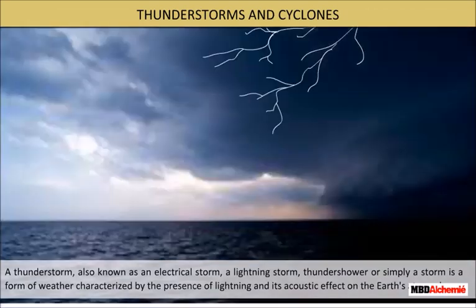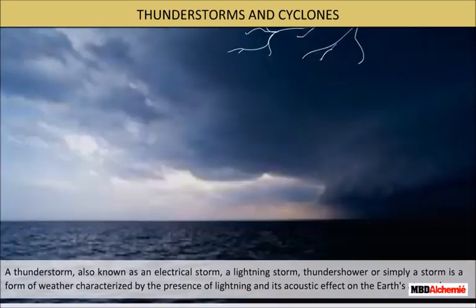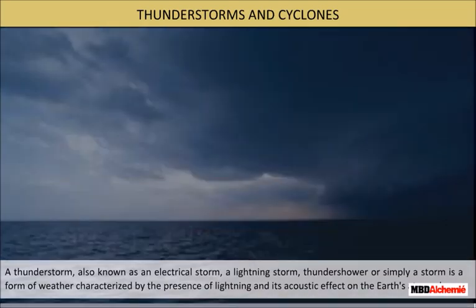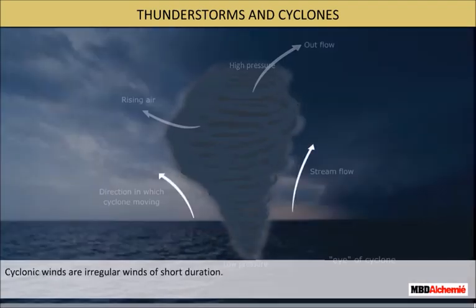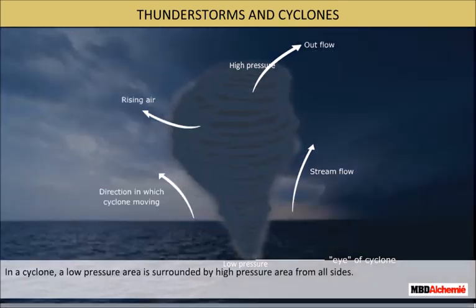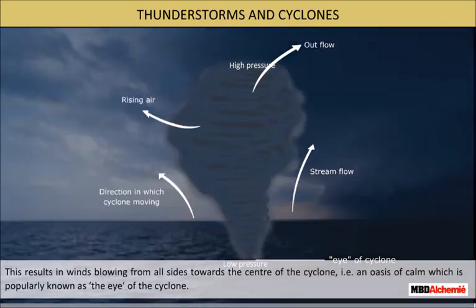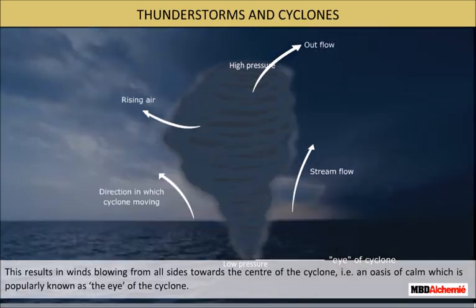Thunderstorm. A thunderstorm, also known as an electrical storm, a lightning storm, thunder shower, or simply a storm, is a form of weather characterized by the presence of lightning and its acoustic effect on the Earth's atmosphere, known as thunder. Cyclonic winds are irregular winds of short duration. In a cyclone, a low-pressure area is surrounded by high-pressure areas from all sides, resulting in winds blowing from all sides towards the center of the cyclone, creating an oasis of calm known as the eye of the cyclone.